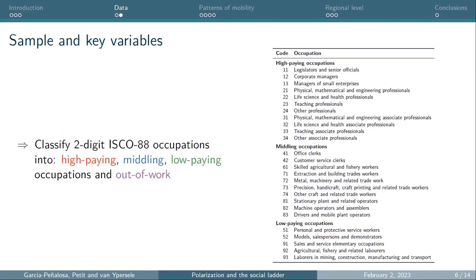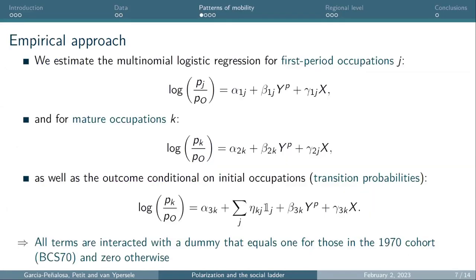For occupations, we use the UK SOC classification and a crosswalk to get ISCO-88 occupations, classifying them according to the job polarization literature into three categories plus an additional category for people not working. The empirical approach uses multinomial logistic regressions for the first-period occupation, for the mature occupation, and for the transition between them. For each regression, we have the effect of parental background and a set of control variables, interacted with a dummy equal to one for the younger cohort, so the coefficient on that interaction captures the change in the role of parental income from one cohort to the other.